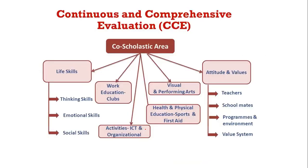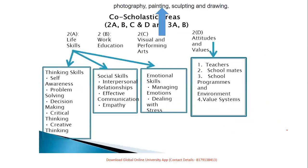Co-scholastic areas depend on life skills — thinking, emotional, and social; work education; IT; visual arts; health and physical education; sports; first aid; and attitudes and values with respect to the teacher, classmates, programs, environment, and value system. Life skills include thinking skills, social skills, emotional skills, and attitudes and values. Visual and performing arts include photography, painting, and sculpting.